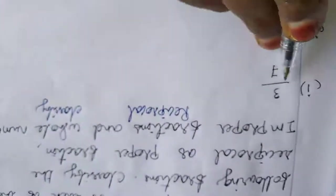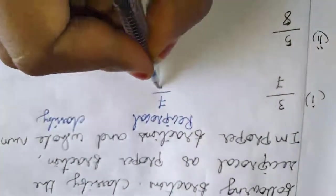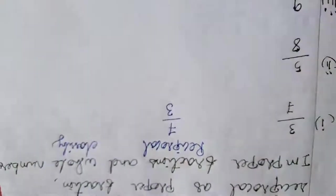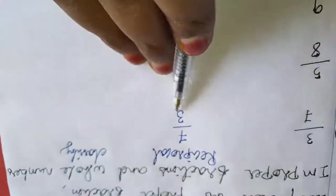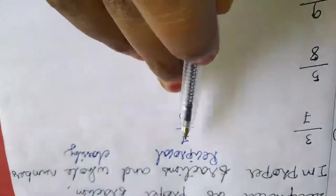The first one's reciprocal is 7/3. Here the denominator is lower than the numerator, so this is an improper fraction.